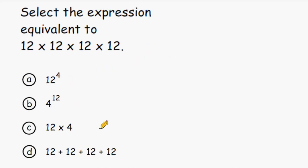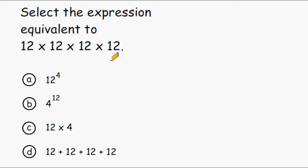In this problem we have to figure out which expression is equivalent to 12 times 12 times 12 times 12. We have a number multiplied by itself, and anything multiplied by itself can be expressed as an exponent. So 12 would be the base, and we're multiplying that base by itself 4 times, so choice A would be the correct answer.